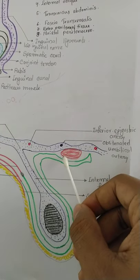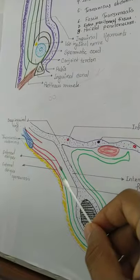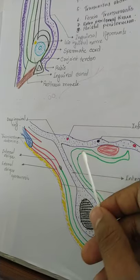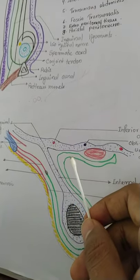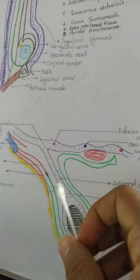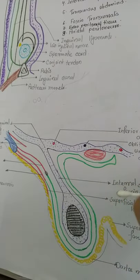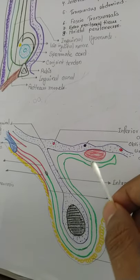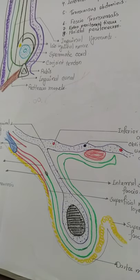There are also some other structures such as vessels present in these abdominal layers, which will be discussed next.